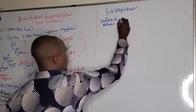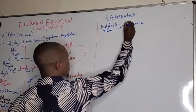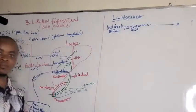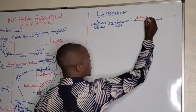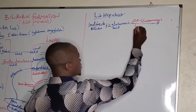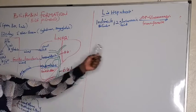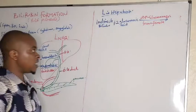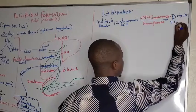In the liver hepatocytes, we add two molecules of glucuronic acid to the indirect bilirubin. Within the liver hepatocytes there is an enzyme known as UDP-glucuronosyltransferase. This enzyme is responsible for adding two molecules of glucuronic acid onto indirect bilirubin to form direct bilirubin.